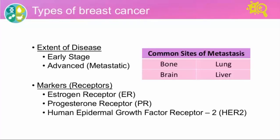We can describe specific changes or mutations in the genes in the cancer cells. We can also describe whether the cancer is due to an alteration in a specific gene that you may have inherited from your mother or father, such as the BRCA1 or BRCA2 mutation.